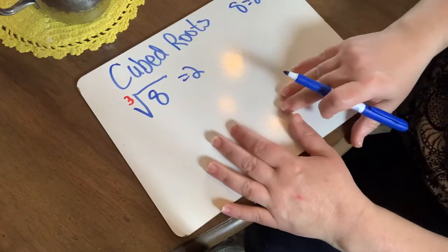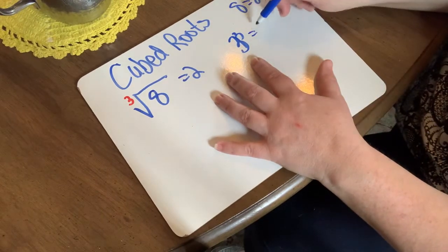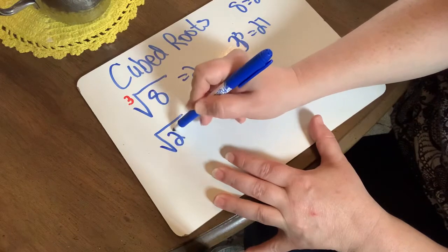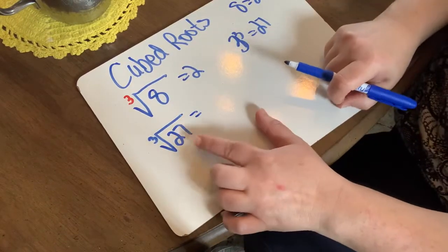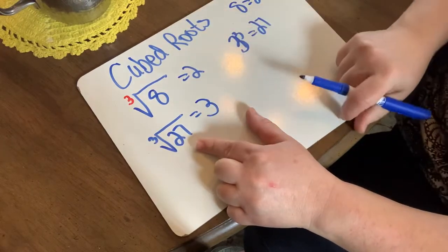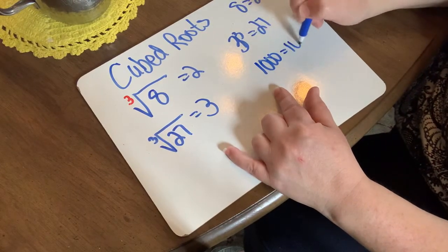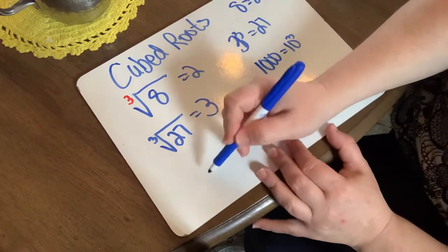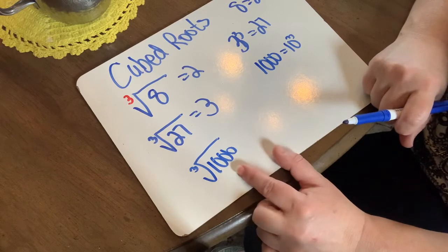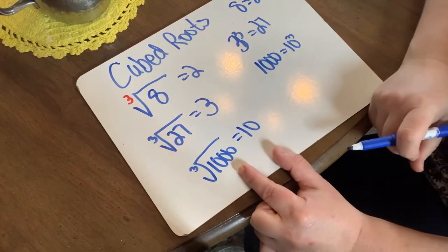What if I'm looking at 3 to the third power? 3 times 3 times 3 is 27. So the cubed root of 27 is 3, because the three factors that are the same number are all 3. One more example: 1000 is 10 to the third power, or 10 cubed. So if I put 1000 inside my cubed root house, I'm looking for the number that when multiplied by itself three times gives me 1000 — that number is 10.